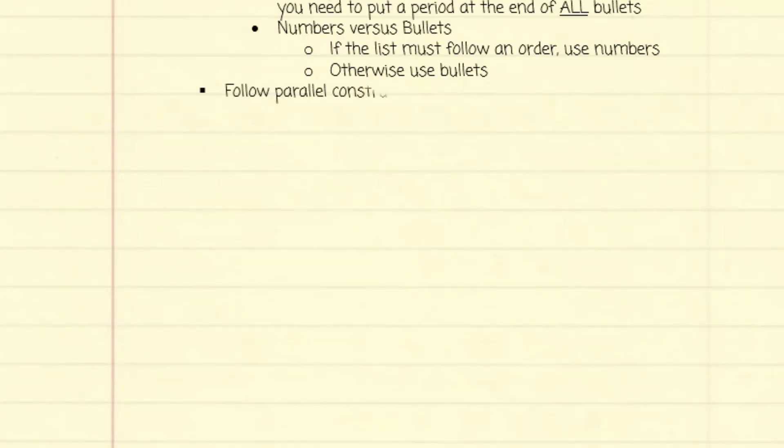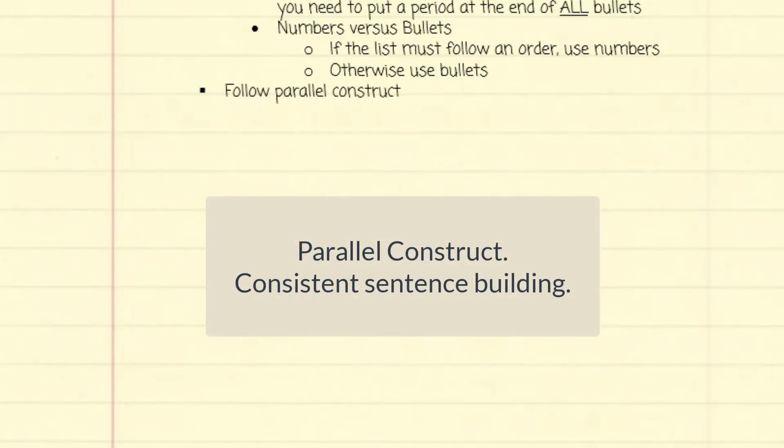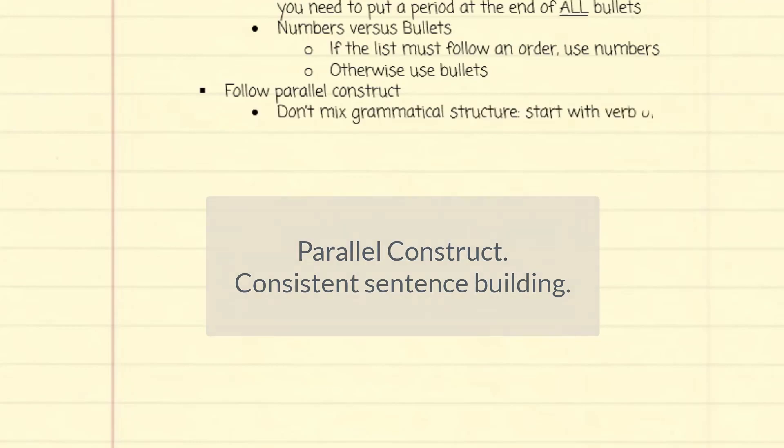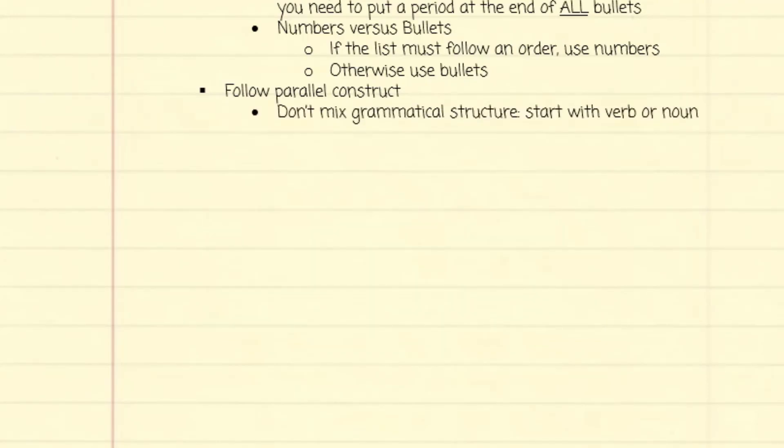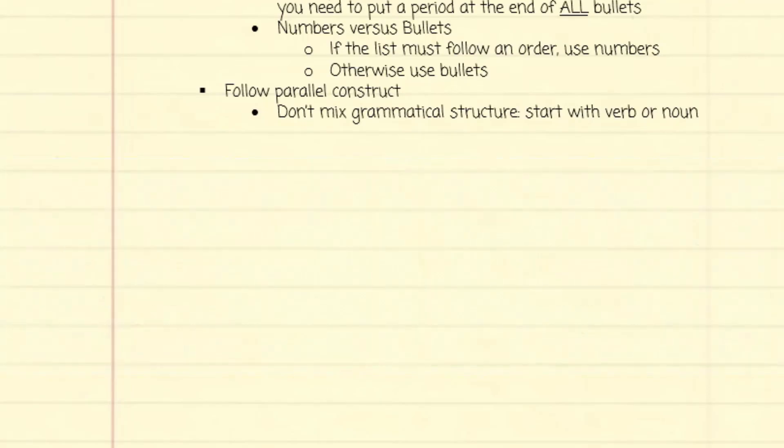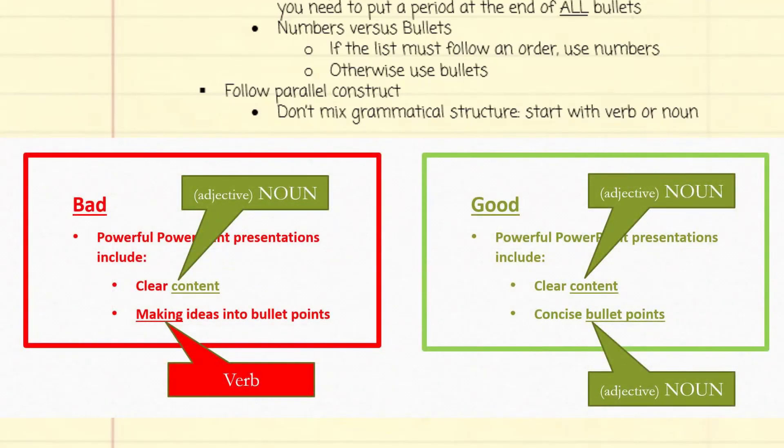Now let's look at parallel construct. That means that you should keep every bullet item in the same format with nouns or verbs. Here's a couple examples. There's no symmetry in the first example. The first line is a noun and the next starts with a verb. The good example is all noun based.